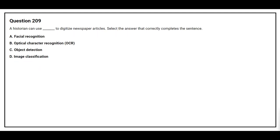Question 209: A historian can use blank space to digitize newspaper articles. Select the answer that correctly completes the sentence. Option A: Facial recognition. Option B: Optical character recognition. Option C: Object detection. Option D: Image classification. The correct answer is Option B, Optical character recognition.